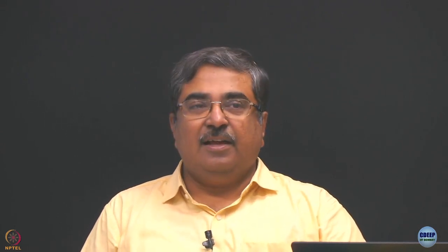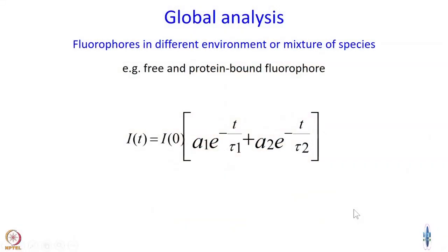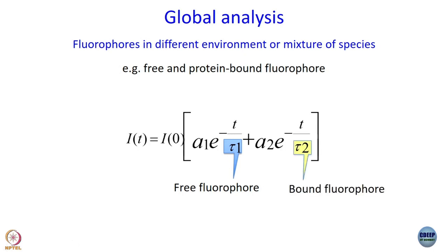We expect a bi-exponential decay, but this is a special kind. Let tau 1 be the characteristic lifetime of the free fluorophore and tau 2 be the characteristic lifetime of the bound fluorophore. When I do a titration — suppose I have 10 sets of data where the concentration of fluorophore is the same and the concentration of protein increases from 0 to some value — do I expect the tau 1 values to be the same or different across the set?